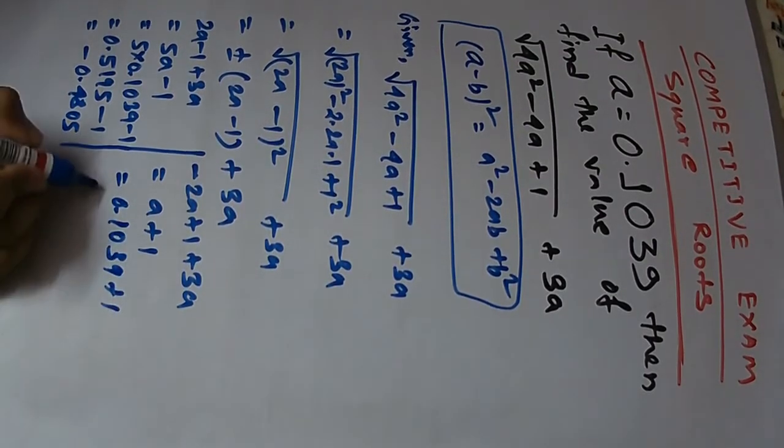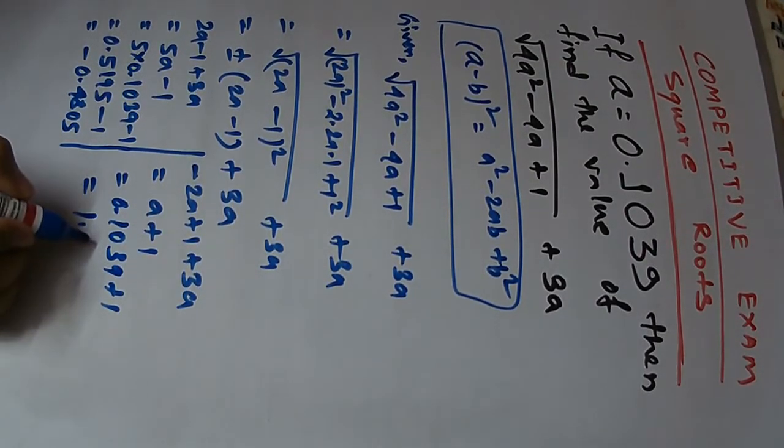So, root 3 plus 1, when this is equal to 1.1039.